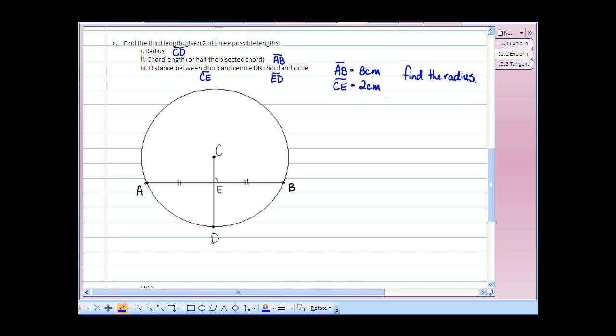So, if AB is 8 centimeters, and I know that the chord has been bisected by this perpendicular bisector, also a radius CD. Then, if AB is 8 centimeters, then EB must be 4 centimeters. CE given to us is 2 centimeters.